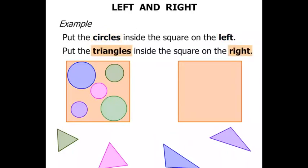The triangles then on the right. Well, if it's not the left, it's the right. So let's move the triangles now to the square on the right.